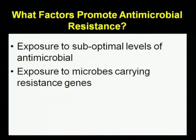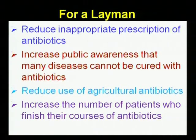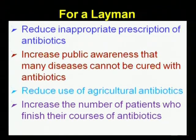Sub-optimal levels of antimicrobials — meaning the right dose at the right time is not being taken — means the MIC level is not maintained in the body, allowing microbes carrying resistance genes to multiply. To address this: reduce inappropriate antibiotic prescriptions, increase public awareness that not all diseases can be treated with antibiotics, reduce antibiotic use in agriculture and animal feeds, and ensure patients complete their full course of antibiotics.